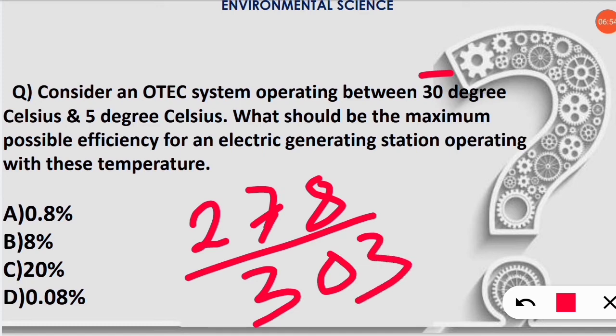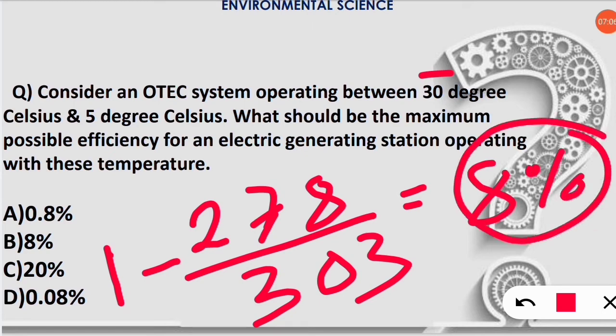I hope you understand. Next, the efficiency = 1 minus the value I have solved. You can see that it will be 8%, so that will be the correct option.